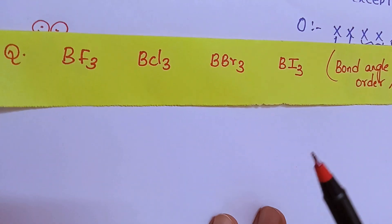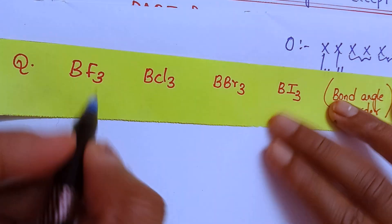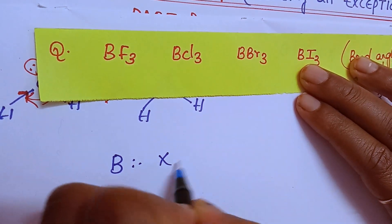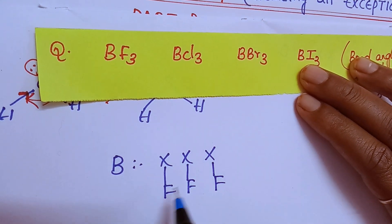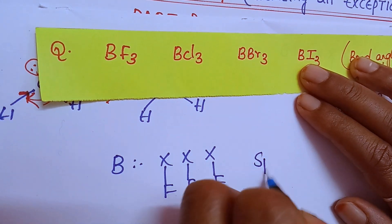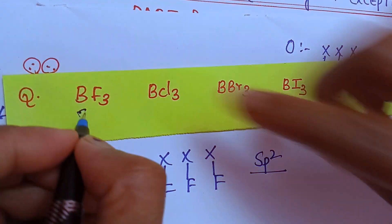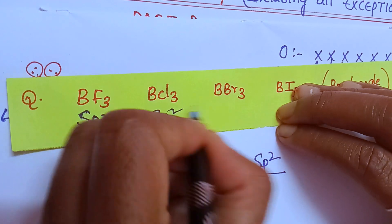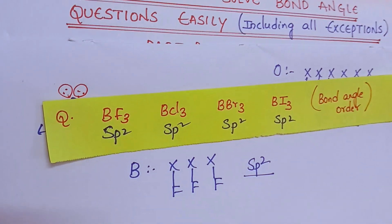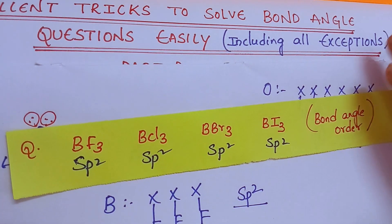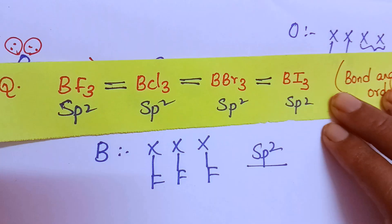Next: BF3, BCl3, BBr3, BI3. Find hybridization. Boron has 3 electrons in the valence shell, each halogen forms one bond, so total 3 bonds — steric number gives SP2 hybridization in every case. There are no lone pairs here. No lone pair, same hybridization, perfect geometry — so all bond angles will be the same. Very interesting!